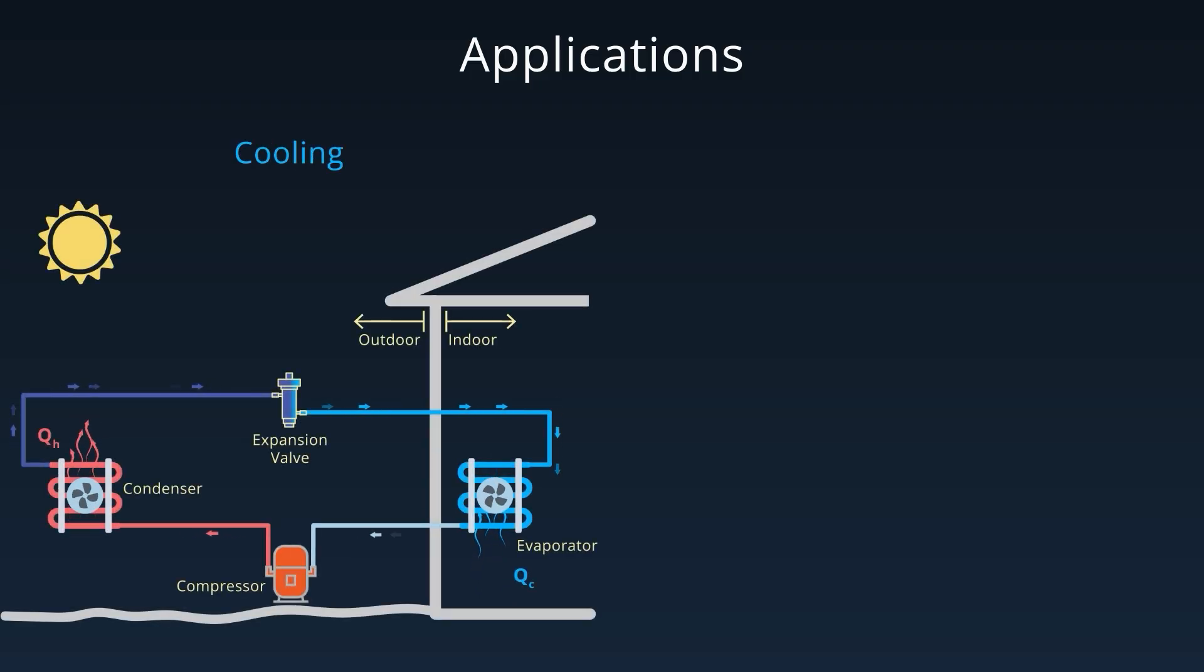Now let's talk applications. The vapor compression cycle has two primary applications. First, cooling mode. The system absorbs heat from the indoor environment and rejects it to the outside. This is the basic principle behind air conditioners and refrigerators.